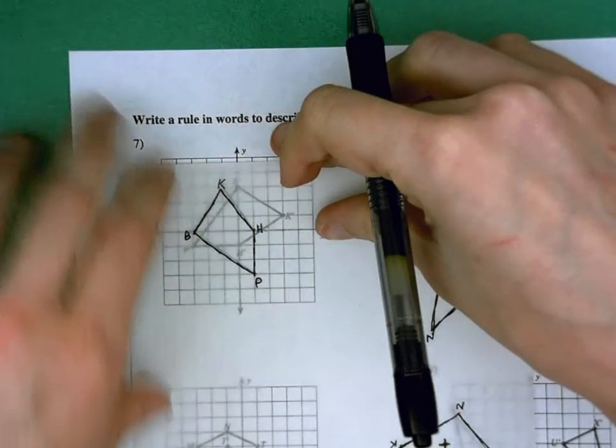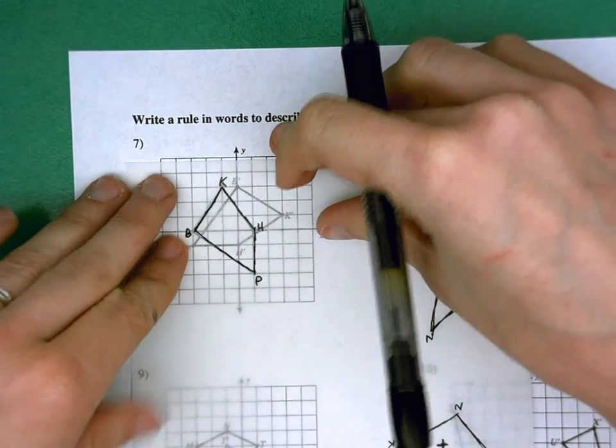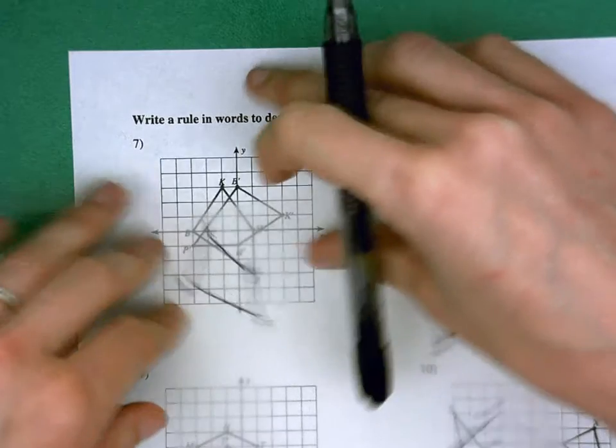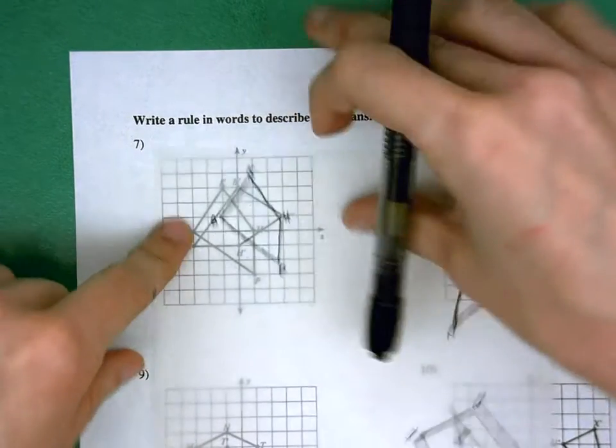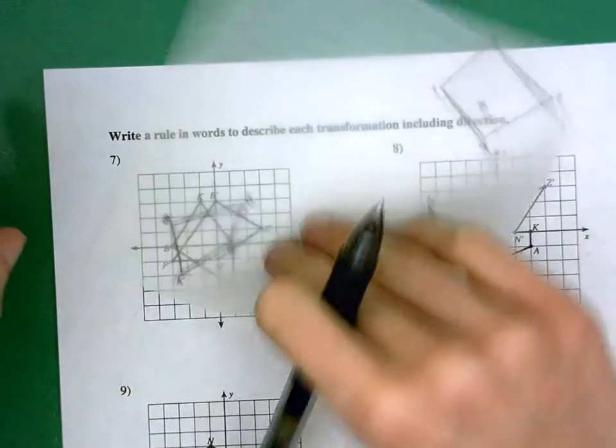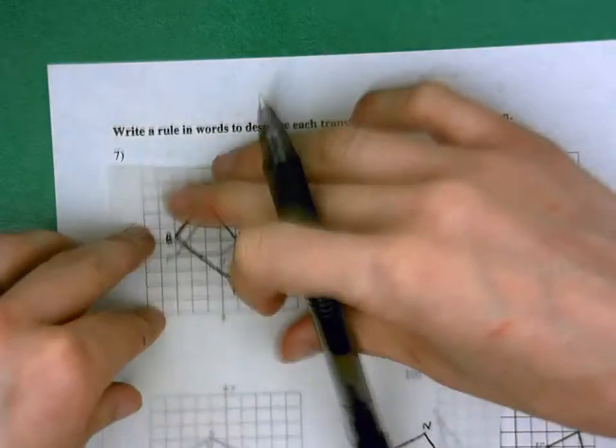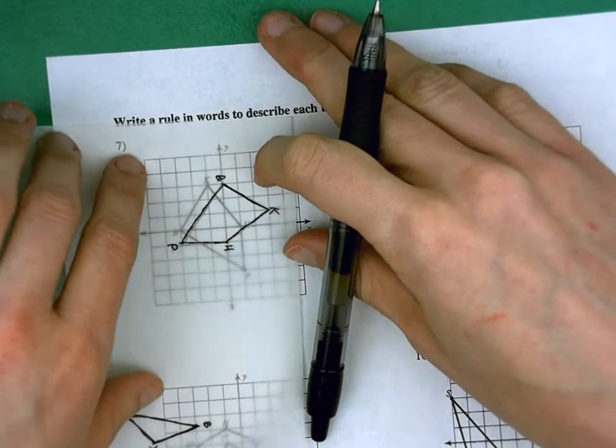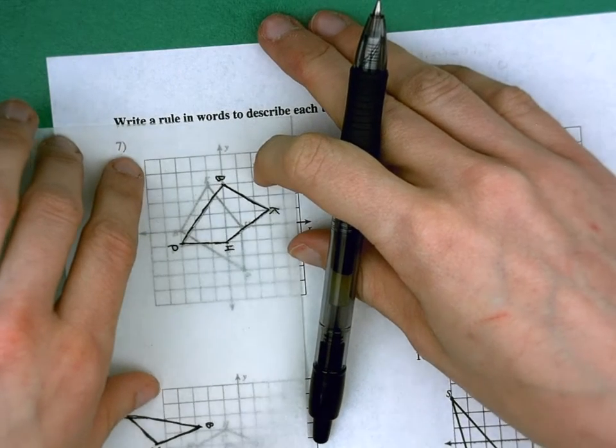And so if you can't automatically see that it's a rotation, you might want to just play with it at first. See, can I just slide it and get it to land? Can I flip it and get it to land? No. Okay, what if I turn it? Oh yeah, if I turn it, my b lands on top of the b prime, the p on top of the p prime, etc.